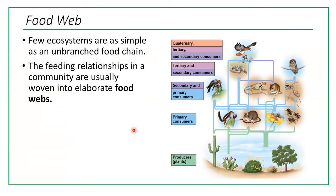Food chains are a very simple representation of ecosystem relationships. Usually we use food webs, which are many food chains combined into an elaborate network of relationships. A food web shows different producers, primary consumers feeding on different types of plants, and secondary consumers — illustrating that the relationships are far too complex to represent with a simple food chain.